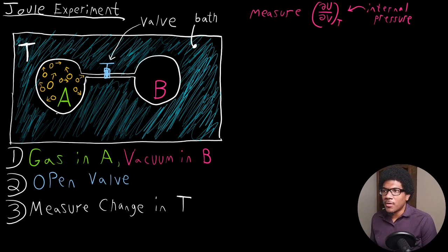We have this setup here in the figure on the left. What you see is a double bulb container with a valve in the middle and gas particles that are trapped in bulb A. And bulb B is actually a vacuum.